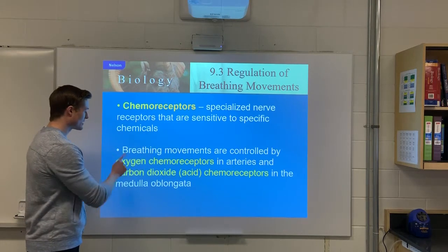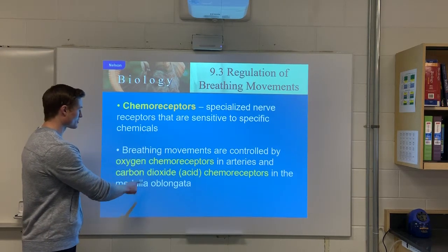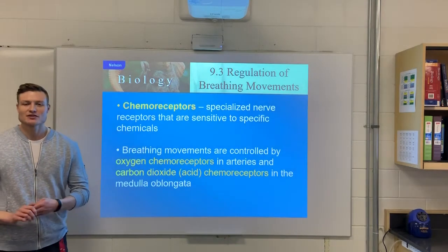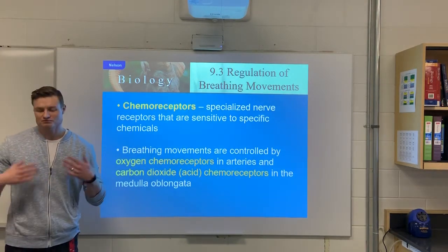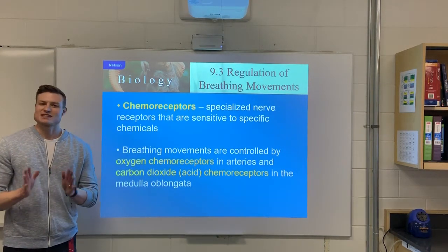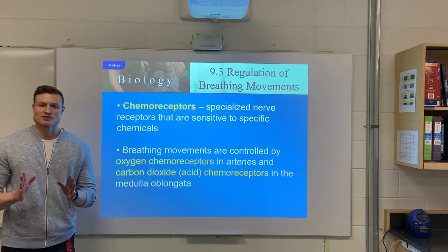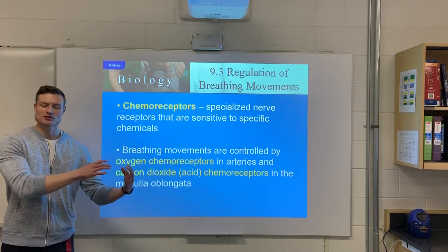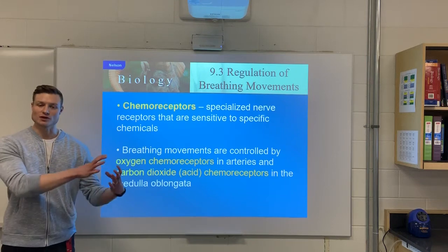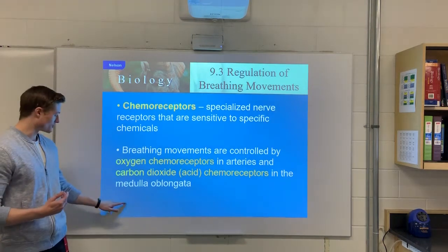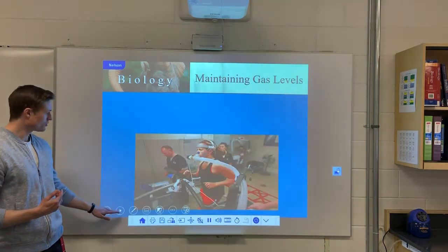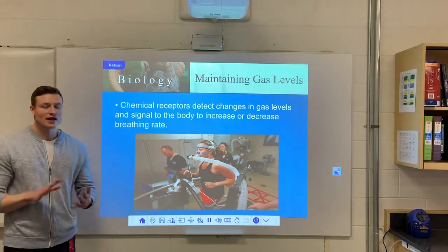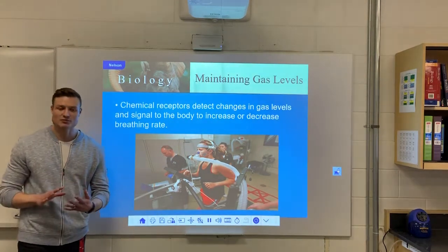The oxygen chemoreceptors are located in our arteries, and the carbon dioxide receptors are located in our medulla oblongata. They're almost like detectors — they're going to detect whether we have too much oxygen or not enough oxygen, too much CO2 or not enough CO2. Interestingly, the main receptor is actually our carbon dioxide receptors.